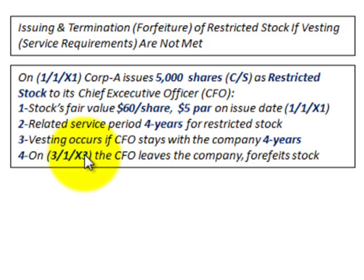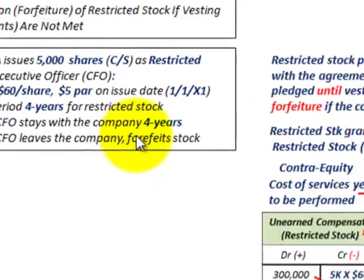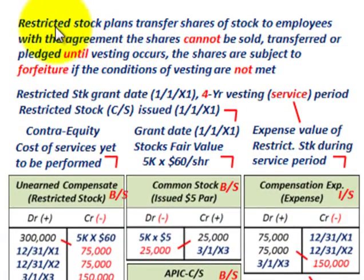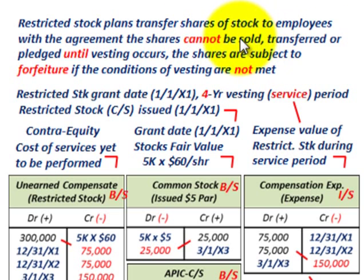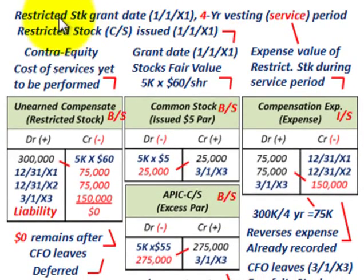On 3/1/X3, the CFO leaves the company and forfeits the stock. To understand what restricted stock is: restricted stock plans transfer shares of common stock to employees with the agreement that the shares cannot be sold, transferred, or pledged until vesting occurs. The shares are subject to forfeiture if the conditions of vesting are not met. In our example, the stock is granted on 1/1/X1 with a four-year vesting or service period required.